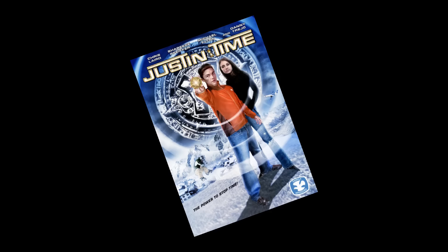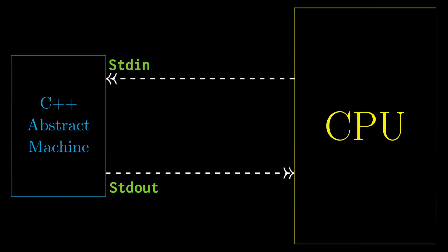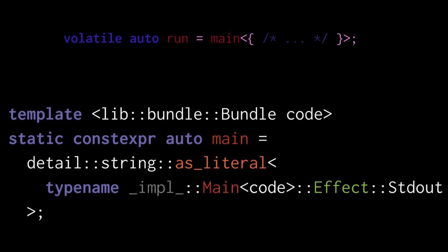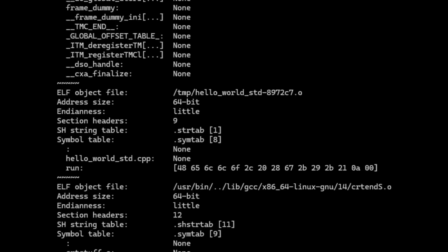If you think about it, you could say that this interpreter engine is actually a JIT compiler. This gives some idea how the C++ interpreter works, but now the problem is: how does the C++ abstract machine interface with your actual machine? When you execute volatile auto run equals main, what's actually happening is that the code is run, and then stdout is converted into a string literal — a sequence of bytes — and mapped to the run symbol. In other words, to read the program output, you need to find and read the run symbol.